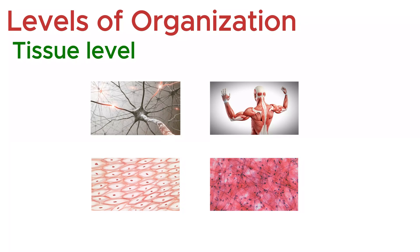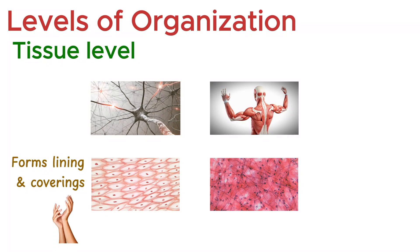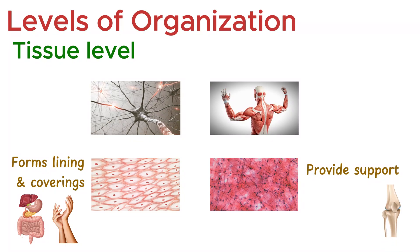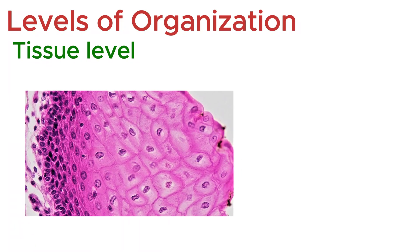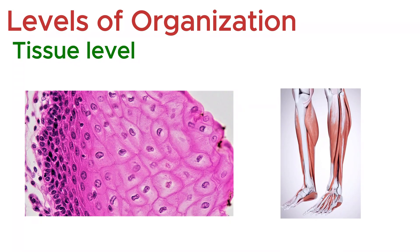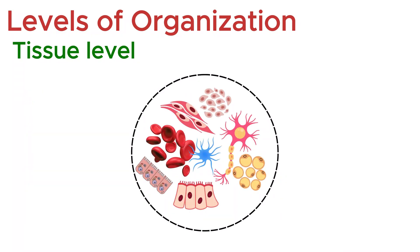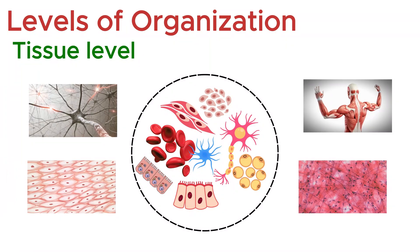There are four main tissue types in the human body. Epithelial tissue forms linings and coverings, like skin or the digestive tract. Connective tissue provides support — examples include bones, cartilage, and blood. Muscle tissue enables movement, and nervous tissue controls and communicates via electrical signals. The way cells are organized in a tissue is key to its function: layered epithelial cells form protective barriers, while elongated muscle cells contract to create movement. By organizing countless cells into these four tissue types, the body takes the first big step toward managing the complexity of life.